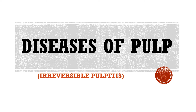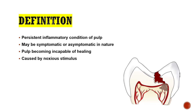Welcome back. Moving on towards the next part in the series of diseases of dental pulp. The topic is irreversible pulpitis. In the last part we covered reversible pulpitis — inflammation of the pulp that was early enough to reverse back to its normal condition. Now in irreversible pulpitis, the inflammation has increased so much into the pulp that you cannot reverse it back to normal.